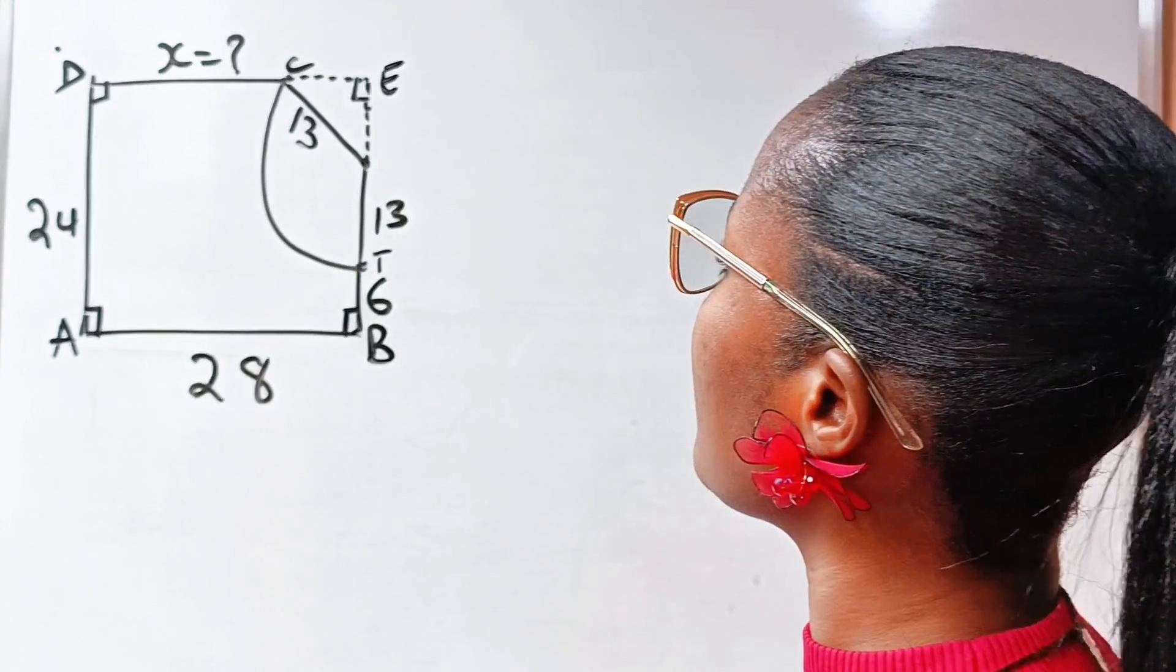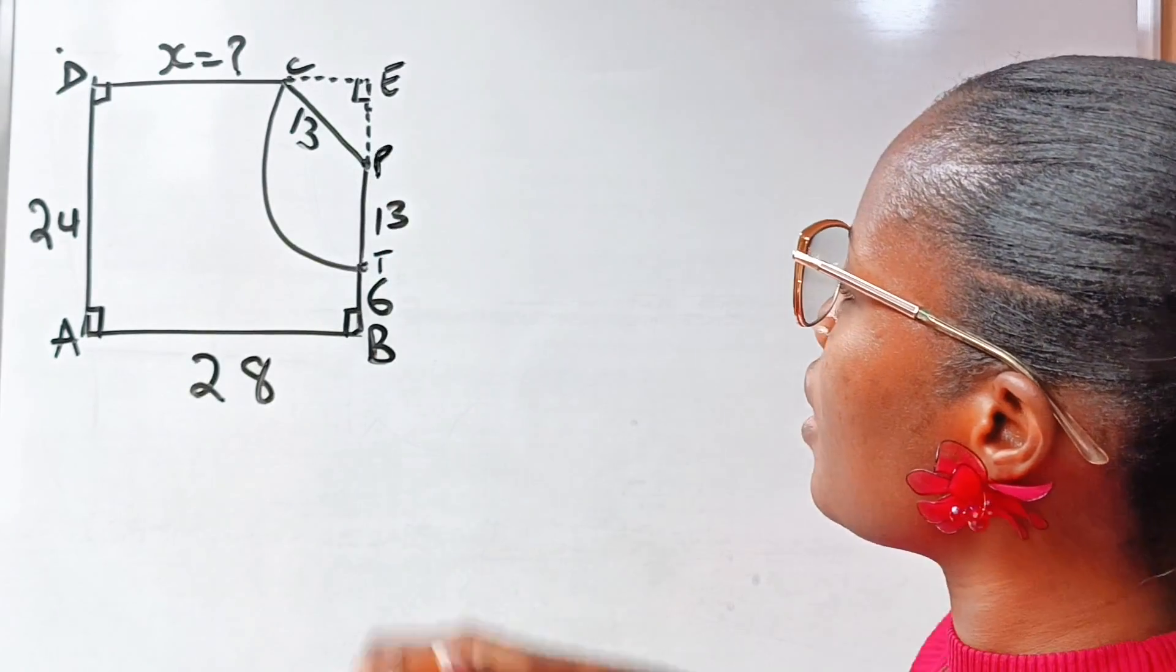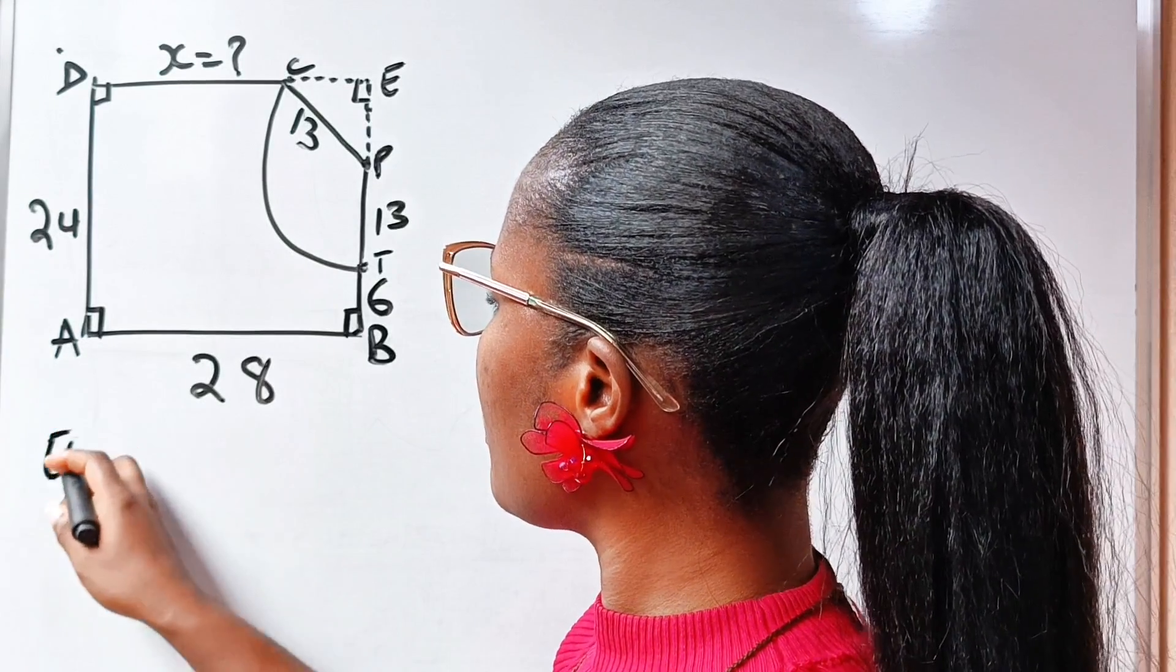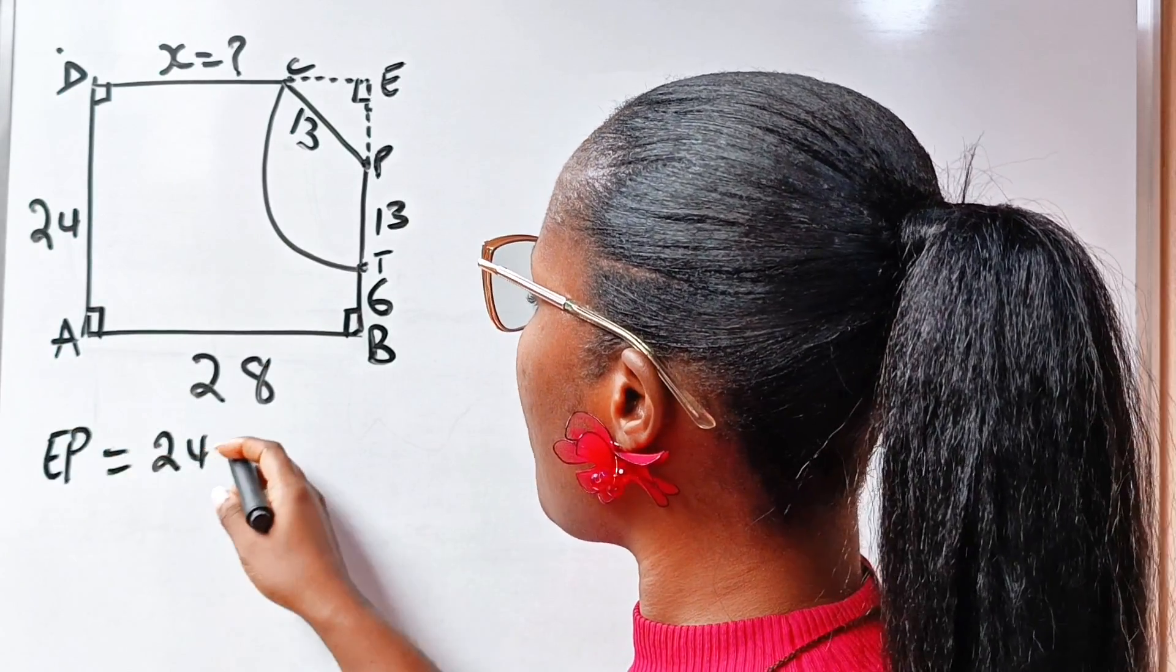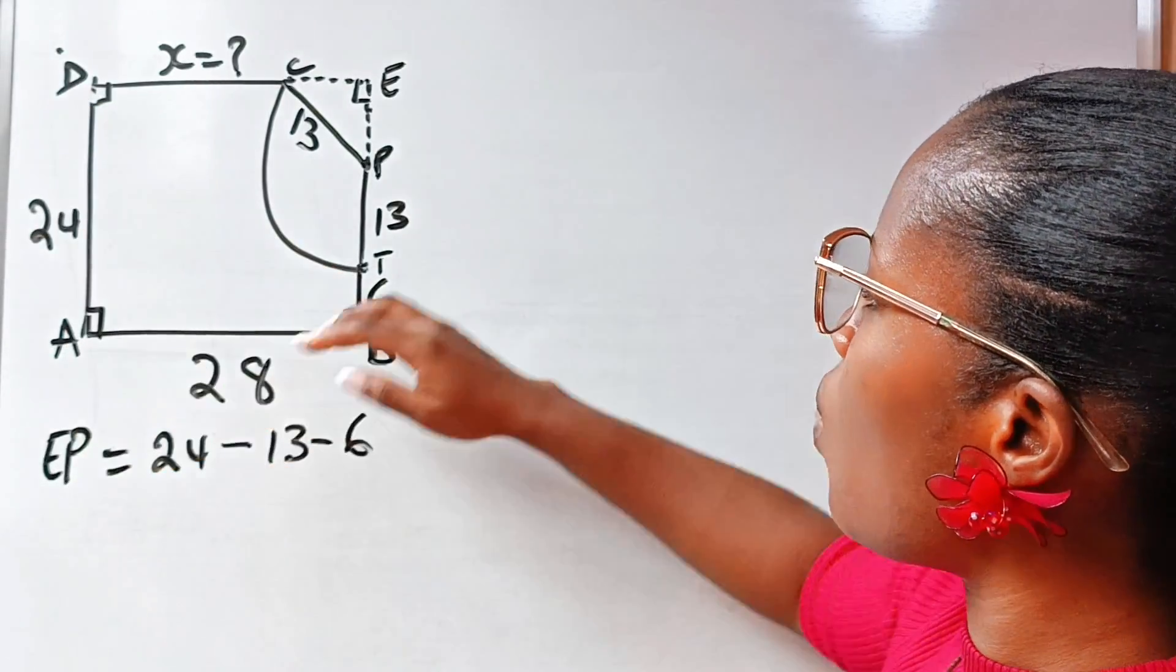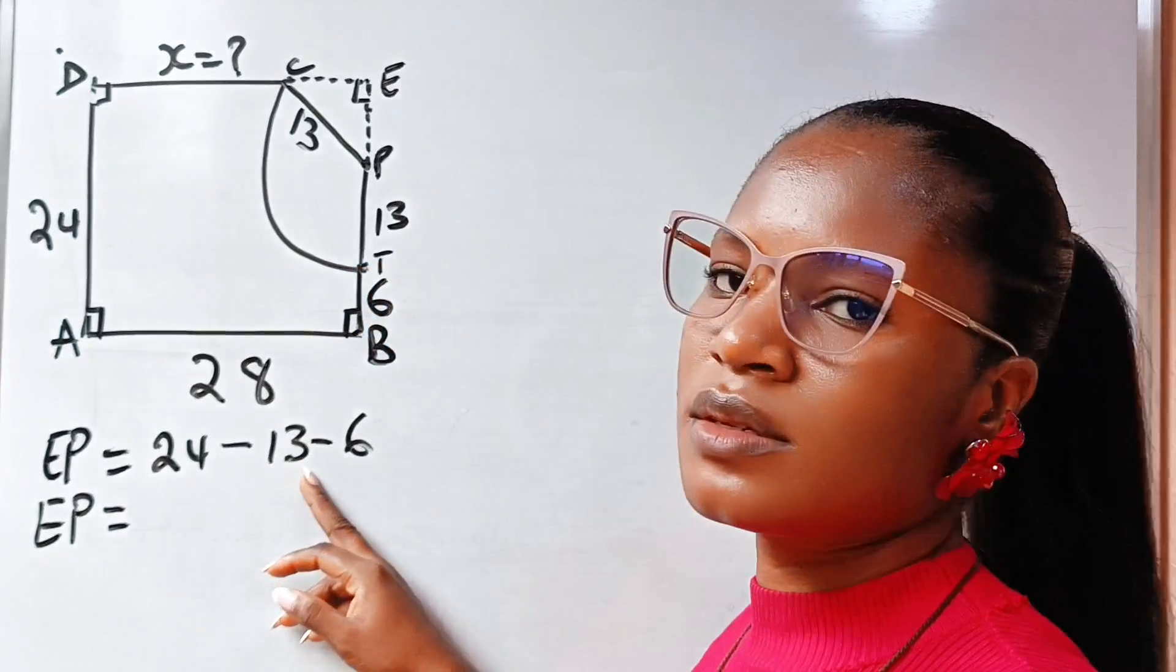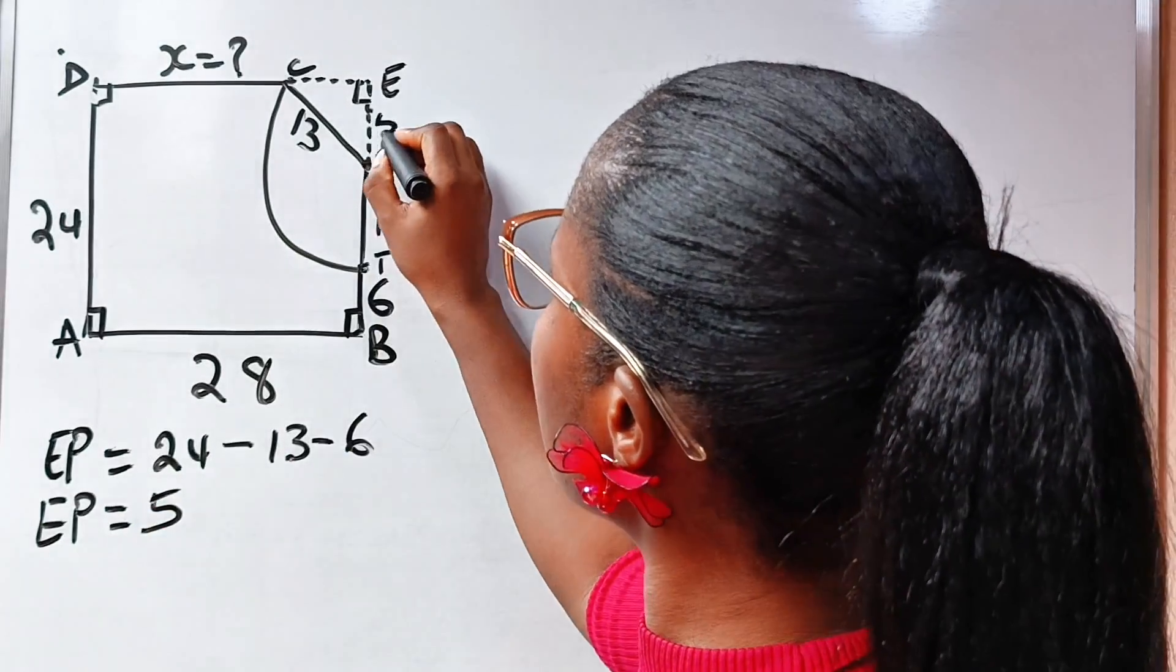Now, if we call this point E, from E to C let's call here P. Length EP can be gotten by subtracting the sum of this and this from 24. So EP is equal to 24, which is DA, minus 13 minus 6. Since 24 minus 13 is 11, and 11 minus 6 is 5, EP equals 5.